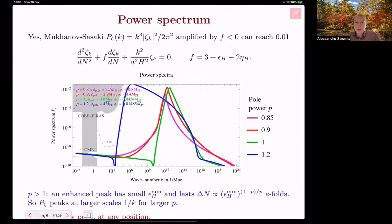To compute the power spectrum, we solve the full Mukhanov-Sasaki equations. Finding this result, the power spectrum as function of the wave number. If the pole is bigger than one, then one can get a big enhancement. However, the inflaton remains around the pole for a big number of e-folds. As a consequence, this enhancement must happen at a small wave number.